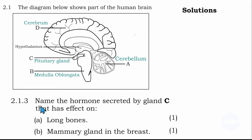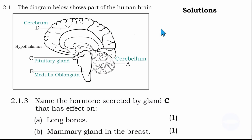The next question says: name the hormone secreted by gland C that has an effect on a long bone. Gland C is the pituitary gland. The hormone that has an effect on a long bone and is secreted by the pituitary gland is the growth hormone. So for 2.1.3, answer A is growth hormone.